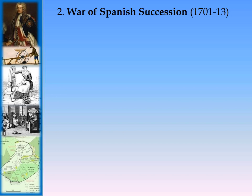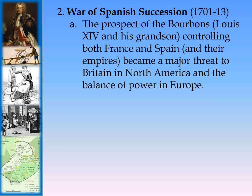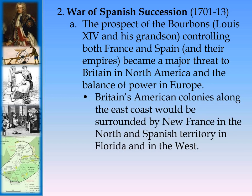The War of Spanish Succession, 1701–1713, involved both France and England. The prospect of the Bourbons — Louis XIV and his grandson — controlling both France and Spain and their empires became a major threat to Britain in North America and to the balance of power in Europe. Britain's American colonies along the East Coast would be surrounded by New France in the North and Spanish territory in Florida and the West.